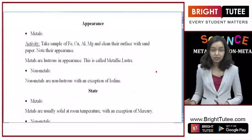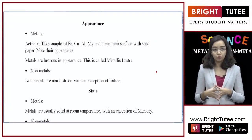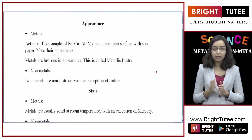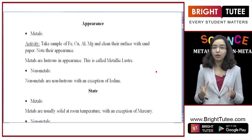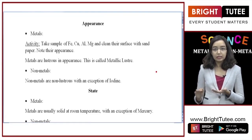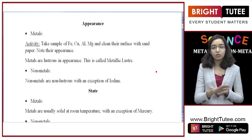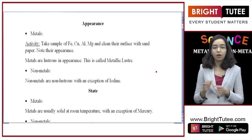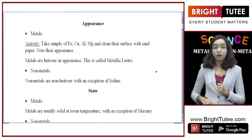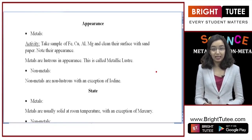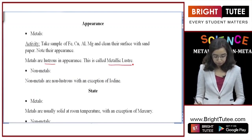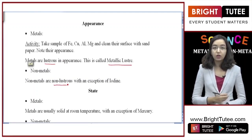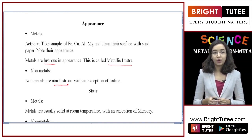The first physical property is appearance — how does the element look to us. To study this, take any metal sample such as iron, copper, magnesium, or aluminium, and clean the surface with sandpaper to remove all impurities or any corrosion formed on the surface. Once you do that, observe its surface. You will see that all metals are lustrous, that is they are shiny in nature. This property is called metallic lustre. Nonmetals on the other hand are not lustrous — their surface does not shine.